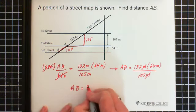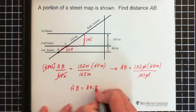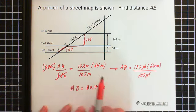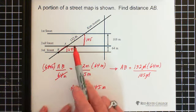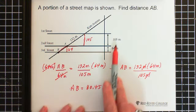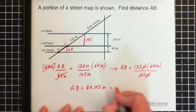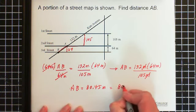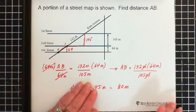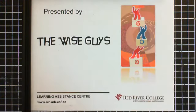So we end up with 80.45, and that is meters. And let's take a look at our significant figures here. We have three here, three here, and two here. So our answer will have two, and it will be 80 meters. All right. So that was brought to you by Wise Guys. We're at the Learning Assistance Center of Red River College. And I hope you have a good day. Take care.